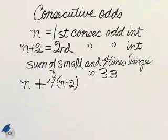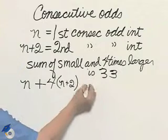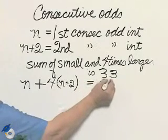See, I need the parentheses. The word is is equal sign and 33.